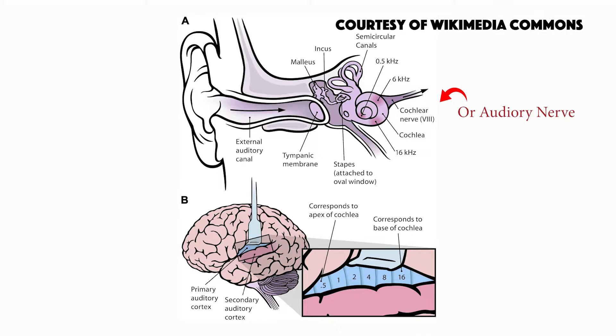The rush of chemicals into the cells causes an electrical signal to be dispersed. The auditory nerve carries this electrical signal to the brain, where it is converted into a sound that we can recognize and understand.